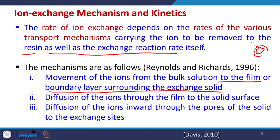The second step is diffusion of ions through the liquid film to the solid surface — how quickly the ions diffuse across the film. The third step is diffusion of ions inward through the pores of the solid to the exchange site — how quickly the ion moves through those pores inside the exchange resin.